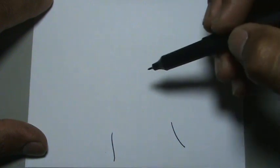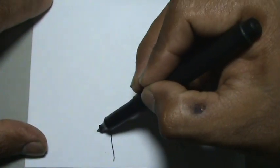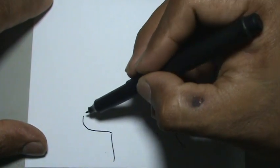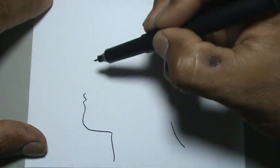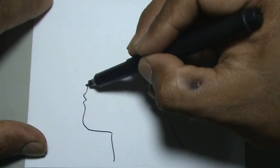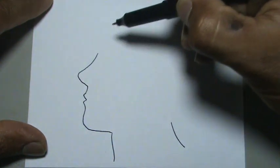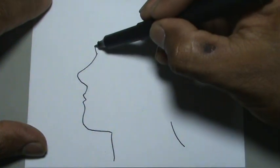Empezamos con el cuello, tenemos el cuello, vamos a dibujar aquí el mentón, la figura de los labios, tenemos aquí la nariz y vamos con la frente.